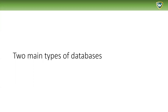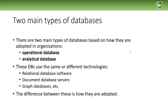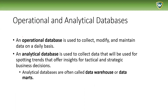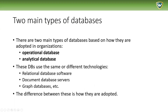There are essentially two main types of databases based on how they are adopted in organizations. There are really many more than just two main types, but this is a broad overview of how they are actually used in practice in organizations — and that's the operational versus the analytical databases.